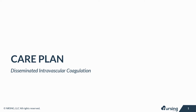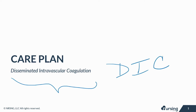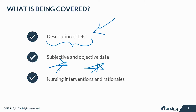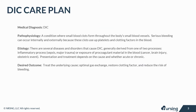Hey guys, let's take a look at the care plan for disseminated intravascular coagulation, also known as DIC. In this lesson, we'll briefly take a look at the pathophysiology and etiology of DIC. We're also going to look at subjective and objective data, as well as nursing interventions and rationales.